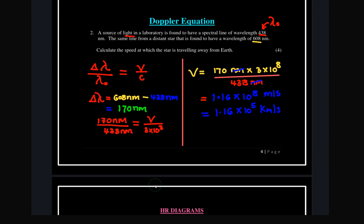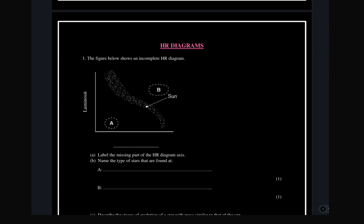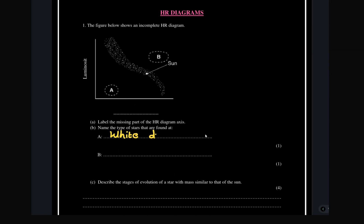Moving on to further questions on HR diagrams — you can be asked a question where the figure shows an incomplete HR diagram with different regions not well labeled. We have the diagonal middle region which is easy to identify as the main sequence, where we have the Sun. Then we have region A and region B. Region A is the white dwarf region — these are hot stars but less bright because they are small. At the top we have red giants. What does X represent? Write in the comment section.